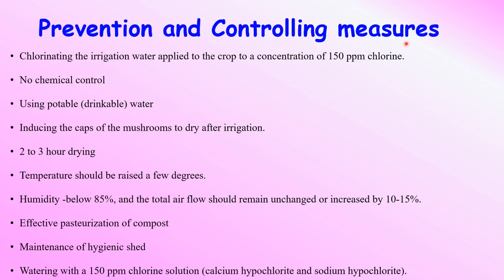To prevent and control bacterial blotch during mushroom cultivation, we should use chlorinated water for irrigation at a concentration of 150 ppm chlorine. There is no chemical control available. We must use portable drinking water and allow the cap of the mushroom to dry after water irrigation — maintaining two to three hours for drying. Temperature should be raised by a few degrees, humidity maintained below 85%, and fresh air introduced at 10 to 15%. Effective pasteurization of compost is required, and calcium must be used in the mushroom cultivation process. Maintain hygiene of the shed and water with 150 ppm chlorine solution containing calcium hypochlorite and sodium hypochlorite. Following these preventive measures will completely control the bacterial blotch.